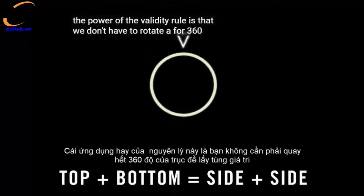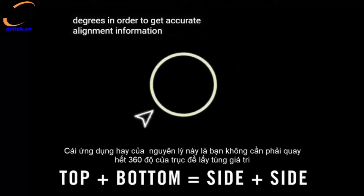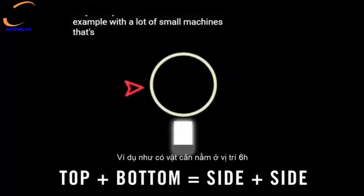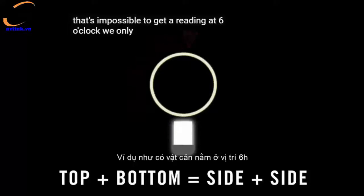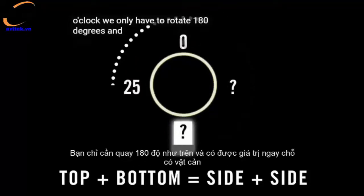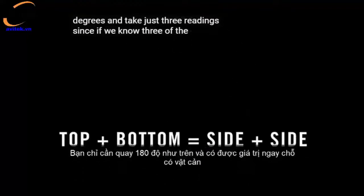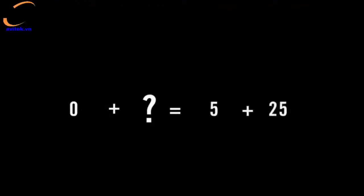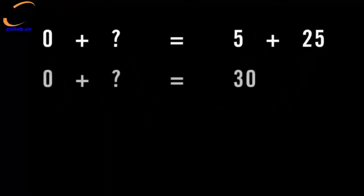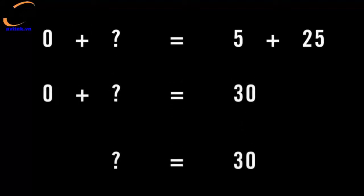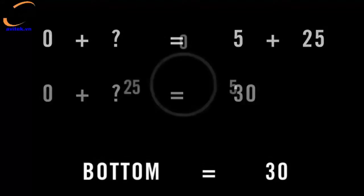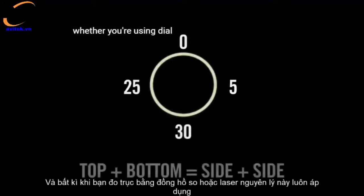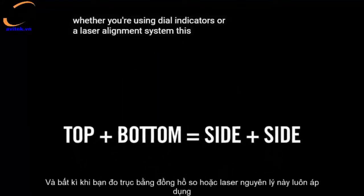The power of the validity rule is that we don't have to rotate a full 360 degrees to get accurate alignment information. That can come in very handy if we have obstructions. With many small machines it's impossible to get a reading at six o'clock, so we only have to rotate 180 degrees and take three readings — since if we know three values, we can always calculate the fourth. Whether you're using dial indicators or a laser alignment system, this rule still applies.